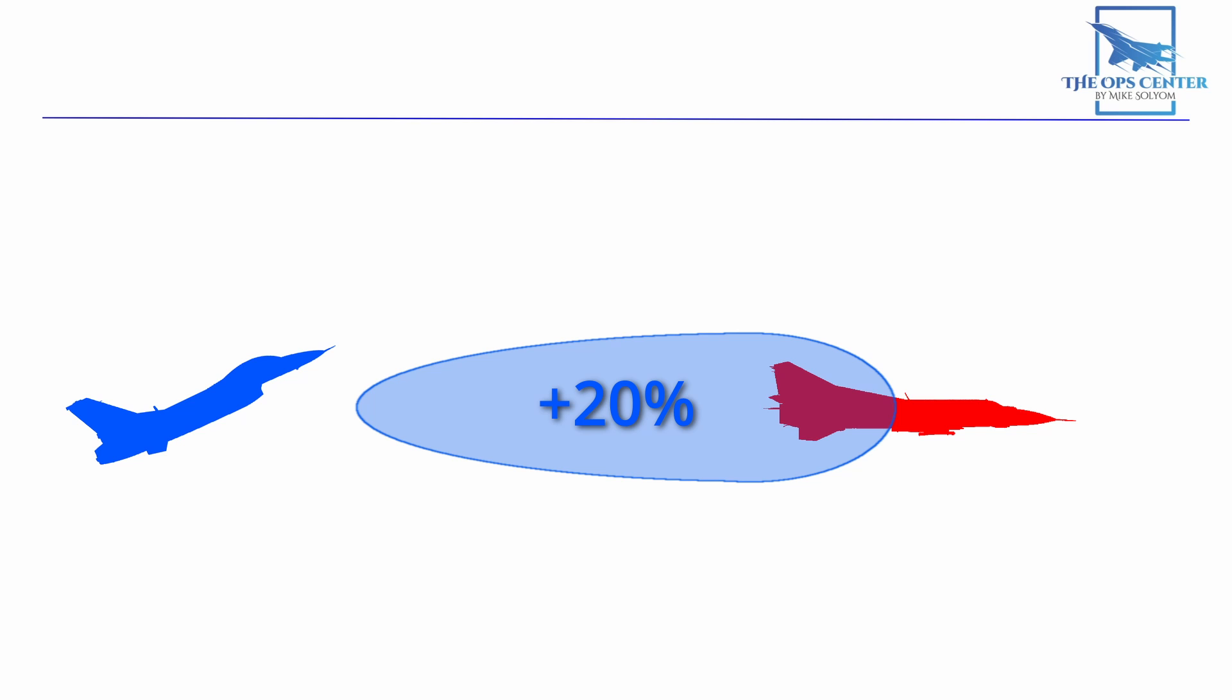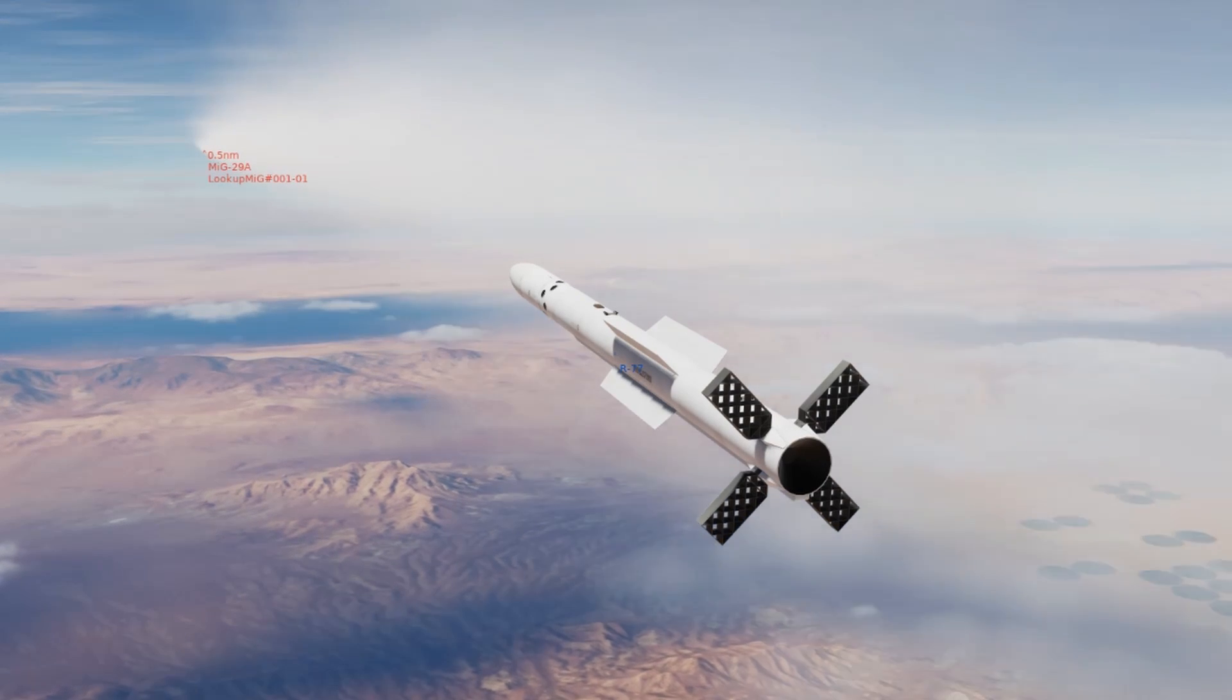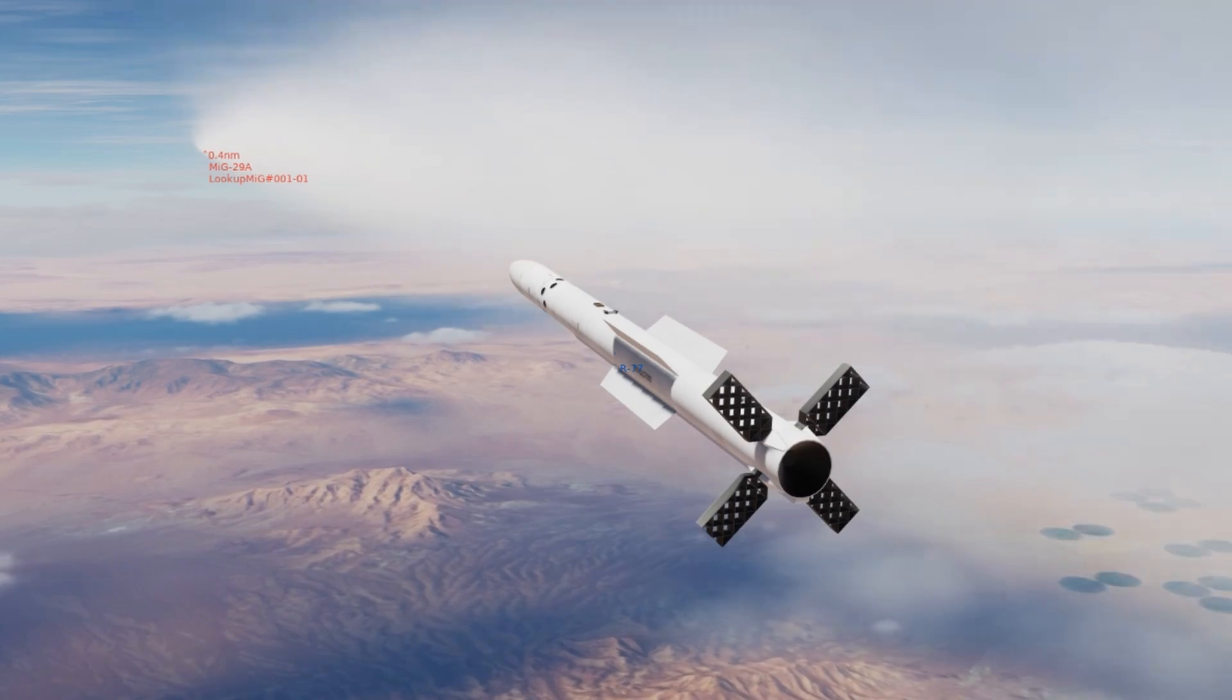To better understand what's happening, we need to watch the missile in flight. In real life, there isn't a camera that can follow a missile's path, but we can do this in DCS. When we do, we'll notice some things about our missile's flight performance.